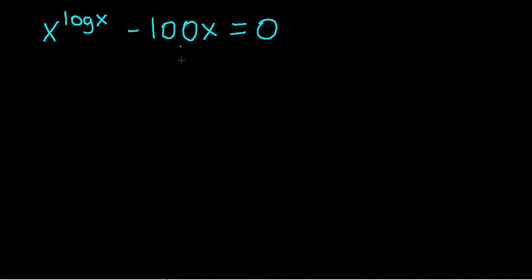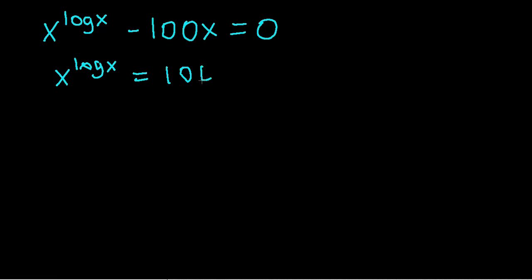We have x to the power log x minus 100x is equal to zero, and we are solving for x. We can rearrange this as x to the power log x is equal to 100x, and we can take logs of both sides.